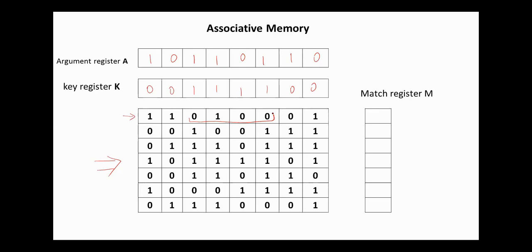In these positions, we haven't matched with A, so here we have zero. In these positions, we haven't matched with A as well, so we'll have here also zero. But here we have matched with A, so we'll have here one. Here we haven't matched with A, zero. Here again, we have matched with A, so we'll have here one, here zero, and here zero as well. These are the match bits.